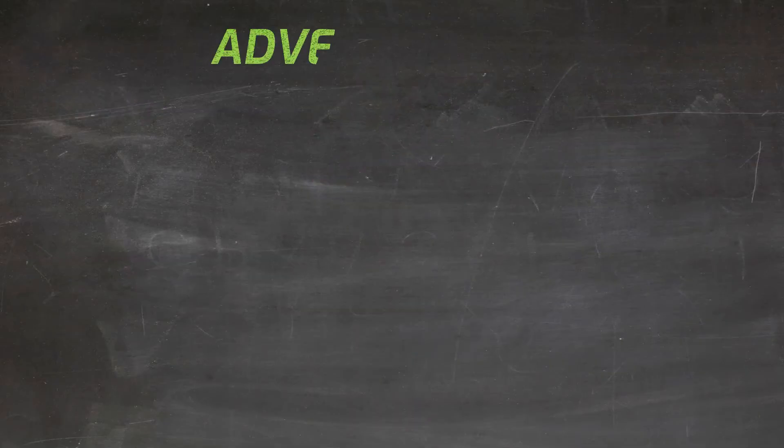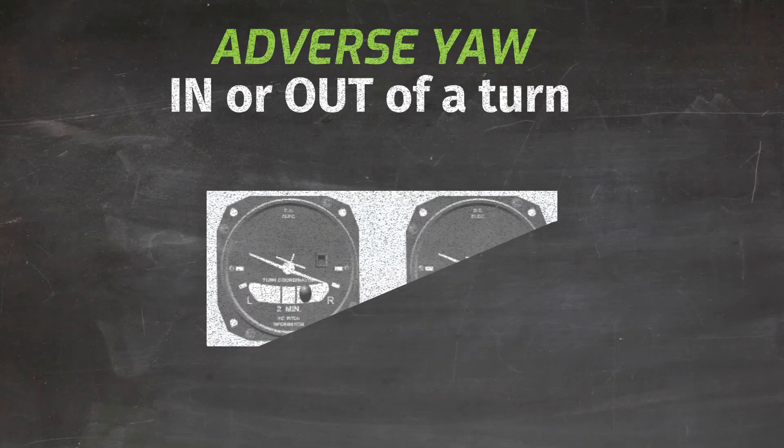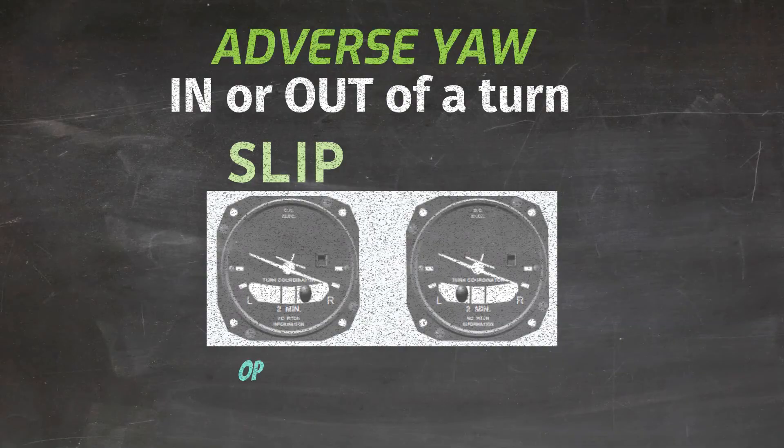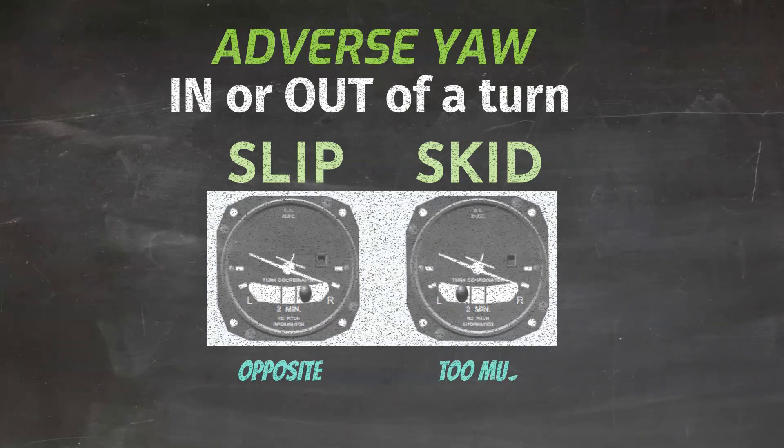Because adverse yaw can happen anytime you're using the ailerons, it can occur when you're turning in or out of a turn. Because of that, the airplane can develop a slip where the nose is trying to travel the opposite direction of the turn, or it can develop a skid where there's too much yaw in the direction of the turn.